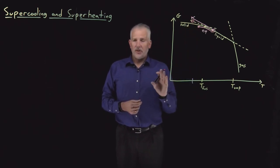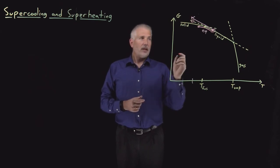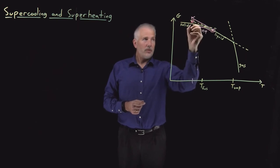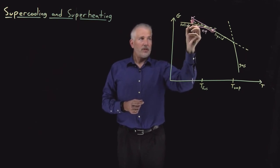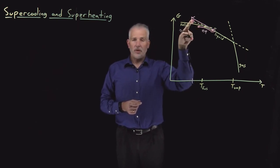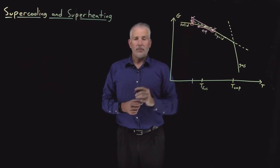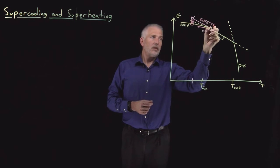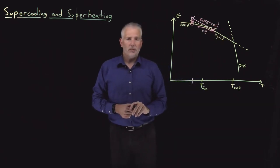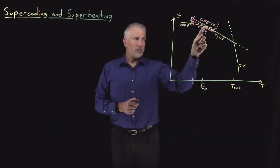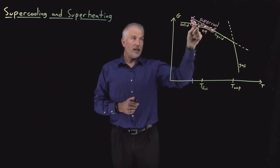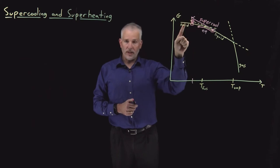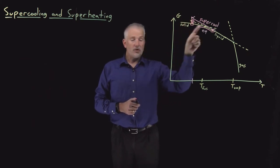It just takes a slight perturbation to cause the liquid to crystallize and form ice, so we rapidly fall down from this non-equilibrium liquid curve down to the equilibrium solid curve. That process, where we don't obey what equilibrium and Boltzmann says we should do, but instead remain in the less stable liquid phase to temperatures below the freezing point before converting to the solid phase, is called supercooling.